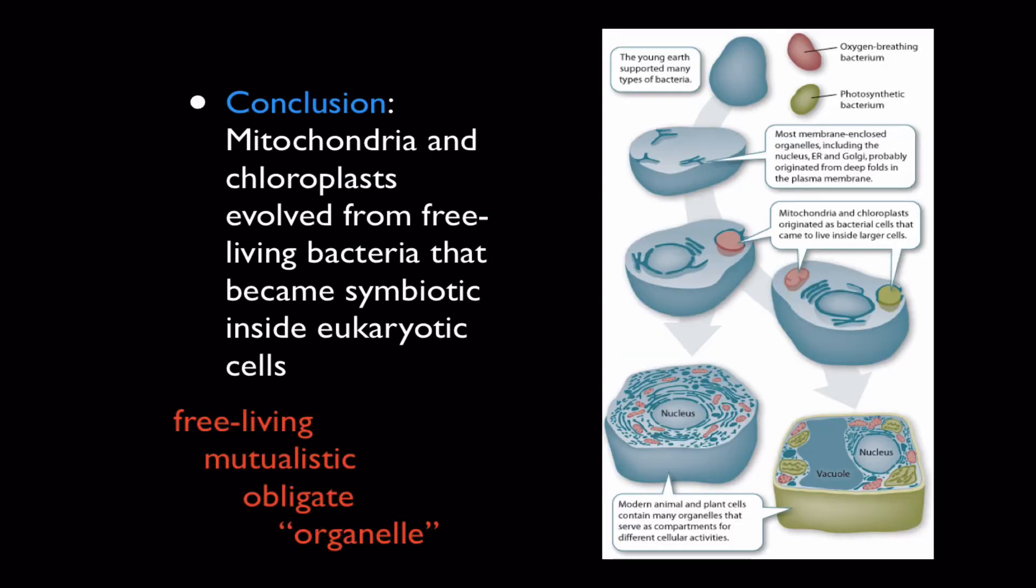So the conclusion from all these observations is that mitochondria and chloroplasts have ancestors that were free living. And this means that at some point in the distant past, approximately 2 billion years ago, their ancestors took up housekeeping inside of a eukaryote cell. So if you look at this diagram, we have a free living oxygen breathing bacteria, which is something like the ancestor of a mitochondrion. And then we have a free living photosynthetic bacterium, which is something like the ancestor of a chloroplast.